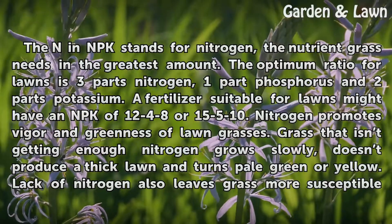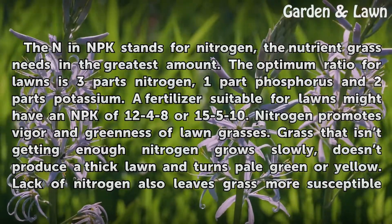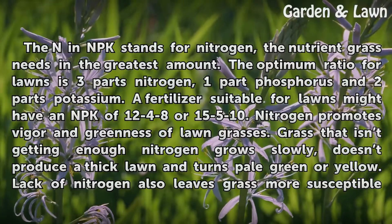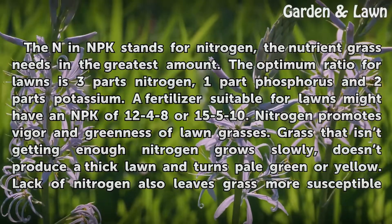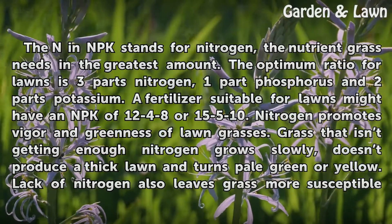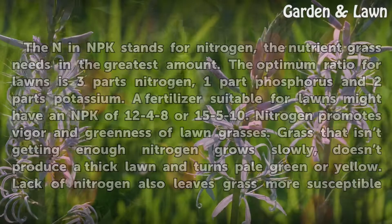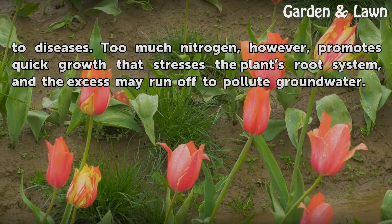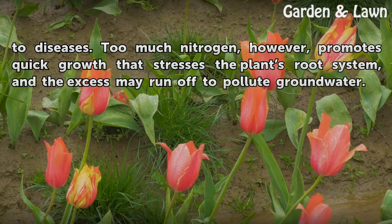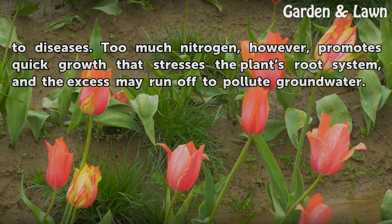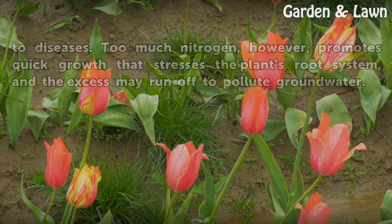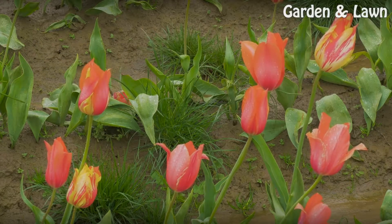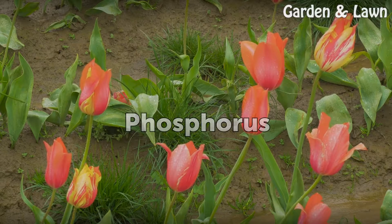Nitrogen promotes vigor and greenness of lawn grasses. Grass that isn't getting enough nitrogen grows slowly, doesn't produce a thick lawn, and turns pale green or yellow. Lack of nitrogen also leaves grass more susceptible to diseases. Too much nitrogen, however, promotes quick growth that stresses the plant's root system, and the excess may run off to pollute groundwater.